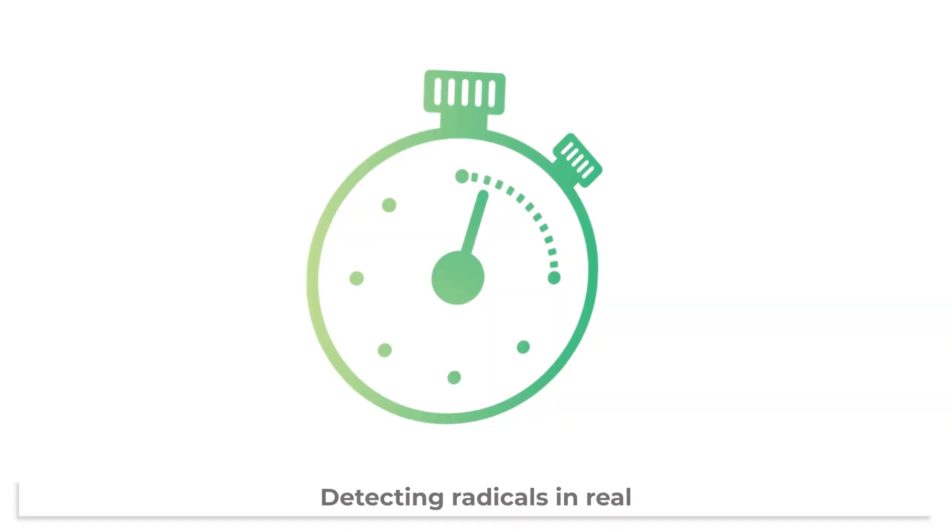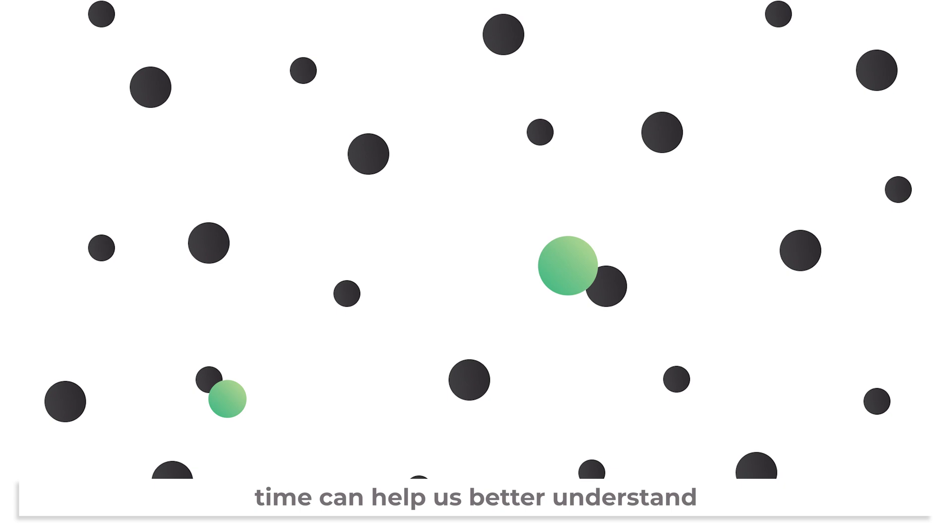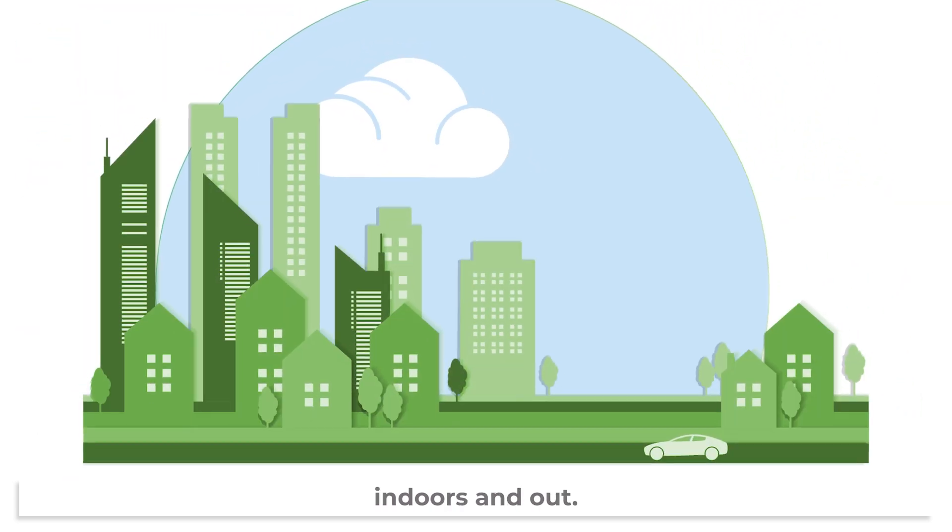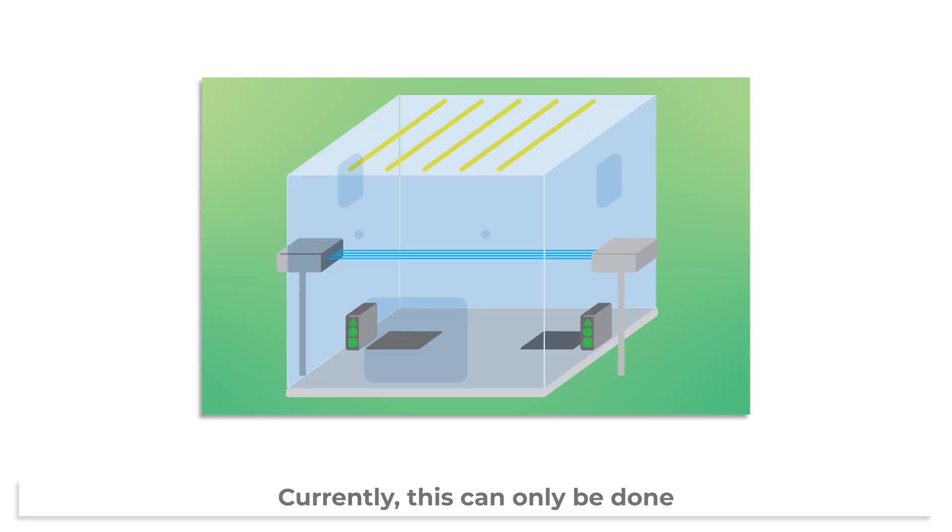Detecting radicals in real time can help us better understand the short-lived reactions that lead to poor air quality indoors and out. Currently, this can only be done with very expensive equipment in just a handful of labs across the world.